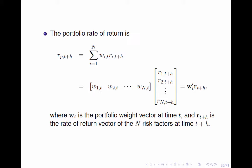Let boldface Wt be the portfolio weight vector at time t, and boldface R with subscript t plus h be the rate of return vector of the N risk factors at time t plus h. We can write the portfolio rate of return at time t plus h in the following compact form.